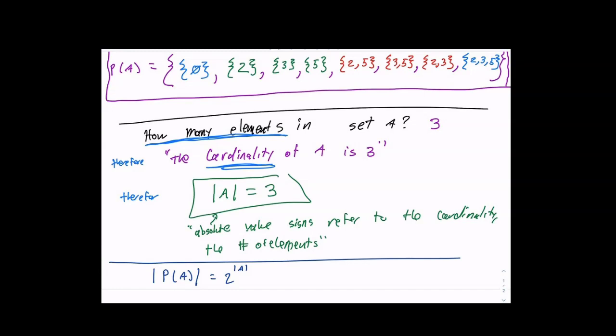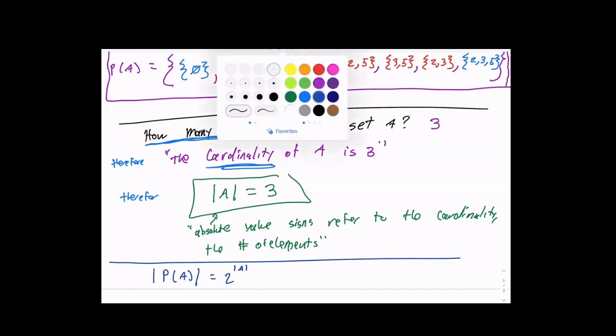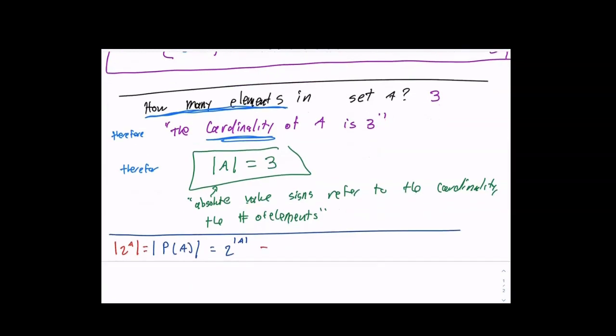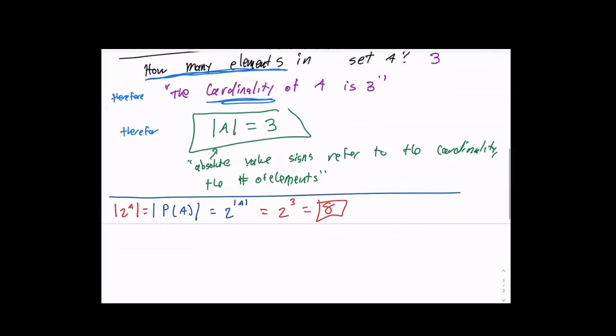Also note that two to the A is a notation for the power set of A. So I get two to the third power, which is eight. If there are four elements in the original set, what is the cardinality of the power set? It would be two to the fourth, which is 16.